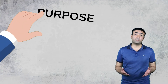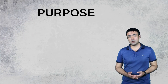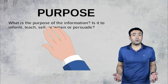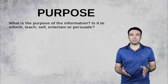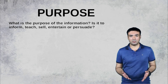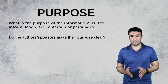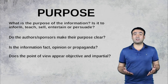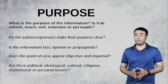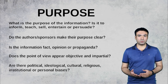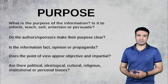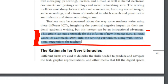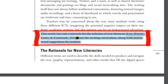The final criterion is purpose. Purpose relates to the reason for the information. Identify purpose through these questions: What is the purpose of the information — is it to inform, teach, sell, entertain, or persuade? Do the authors or sponsors make their purpose clear? Is the information fact, opinion, or propaganda? Does the point of view appear objective and impartial? Are there political, ideological, cultural, religious, institutional, or personal biases? In this article, the author clearly states that she is going to provide a case for adding new literacies into the writing curriculum. The citation index shows that the author is providing evidence for her argument, not just stating her own opinion.